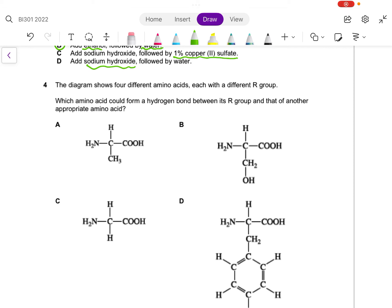Next let's go to question 4. The diagram shows four different amino acids, each with a different R group. Which amino acid could form hydrogen bond between its R group and that of another appropriate amino acid? So anything that can form a hydrogen bond would have to be likely polar in nature.